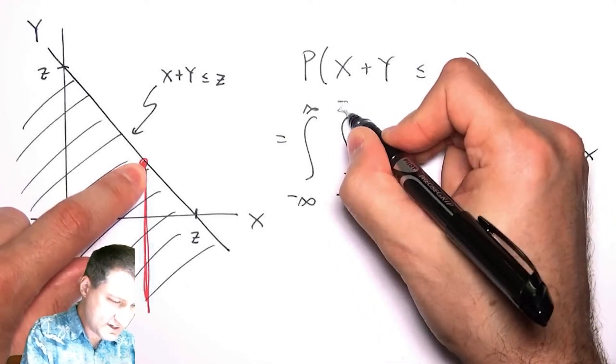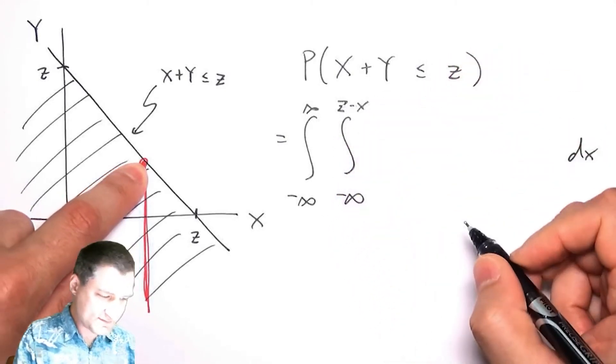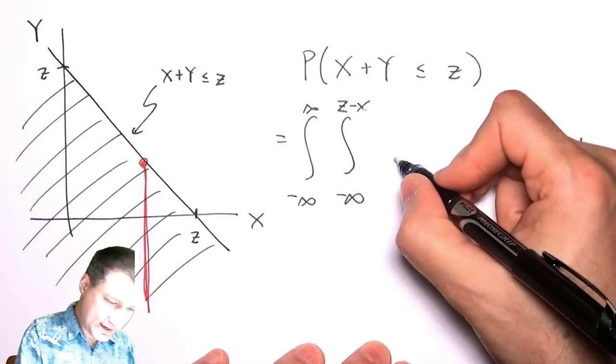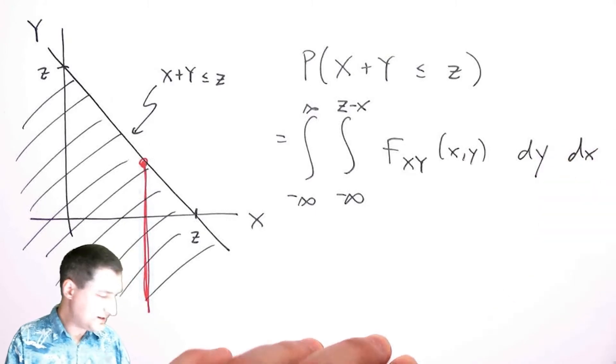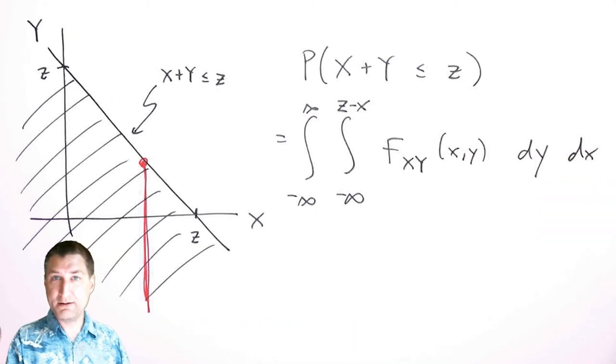Y ranges from minus infinity all the way up to this number, and this number is z minus whatever x value I have. And then I have f of xy, xy dy dx.